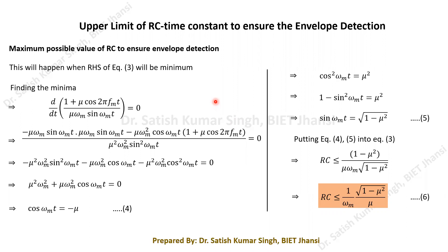As we have already seen, conventional AM is neither bandwidth efficient nor power efficient. The bandwidth requirement for transmitting a conventional AM signal is twice the maximum signal frequency, or twice the bandwidth of the message signal in the case of multi-tone signals. Similarly, only 33.33% of the power is actually used in transmitting the sidebands which contain the message.